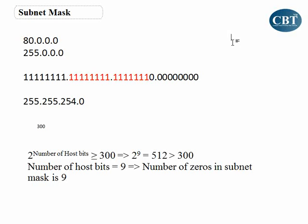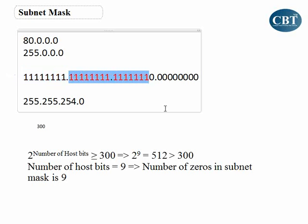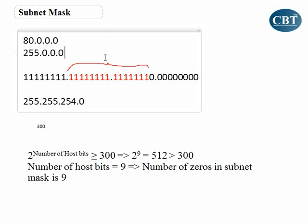So the network bits are fixed, and the host bits are 9. What about the remaining bits in between? Those are the number of subnet bits.